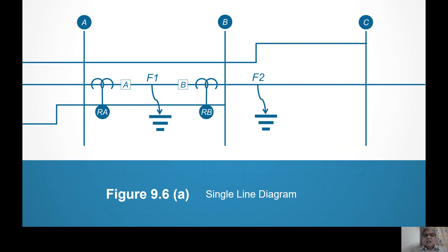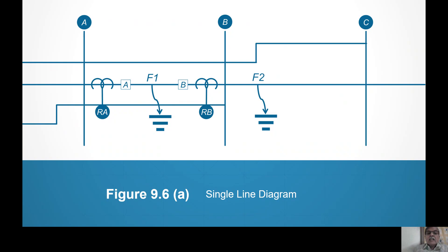That aim was not fulfilled in distance protection or overcurrent protection. Now that aim is fulfilled here. The first zone of relay RA extends up to 120% of line section AB, so it crosses B. Similarly, the first zone of relay RB will cross A — it will be 120% of BA. Second and third zones are as usual with distance backup. If there is a fault in the second or third zone, distance will give backup. That is the main advantage.